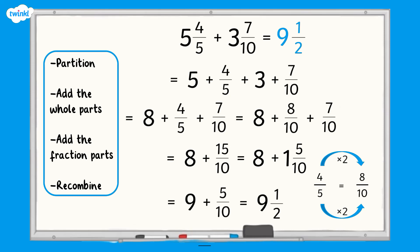When you add the fraction parts, four-fifths and seven-tenths, you get an improper fraction, fifteen-tenths, which you can convert to another mixed number, one and five-tenths. That means that we need to add the whole number parts again so we have nine and five-tenths. Because five-tenths is equivalent to a half, we can simplify it to our final answer, nine and a half.